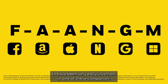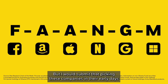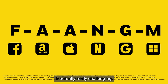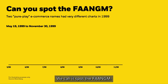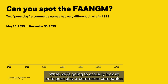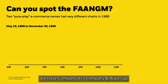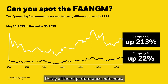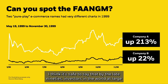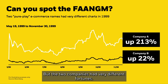We would have loved to have been early investors in one of these companies. But picking these companies in their early days is actually really challenging. So we're going to play a game called Spot the FAANGM. We'll look at two pure-play e-commerce companies and how they performed in the late 1990s. Company A was up a whopping 213%, Company B was up about 22% — pretty different performance outcomes. By the late 90s, investors knew e-commerce was coming and would change the world, but the two companies had very different fortunes.